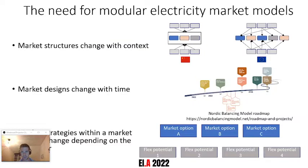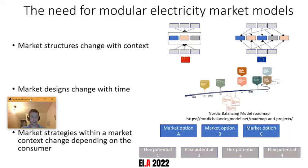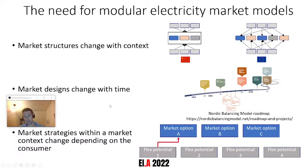Whatever tool we develop has to be able to adapt to these different contexts. For example, a consumer located in China might face a more centralized context, while someone in Europe might face a more decentralized context with different market options. Within a certain context, we have changing market designs as rules change with the market context, such as increased renewables in Europe. Finally, the consumer itself might have different preferences depending on their risk averseness — preferring markets with more short-term prices, long-term prices, higher variability, or lower variability.